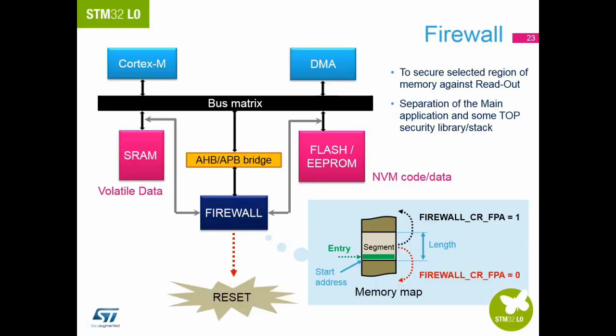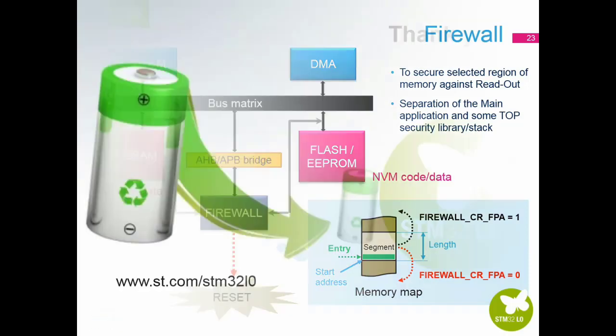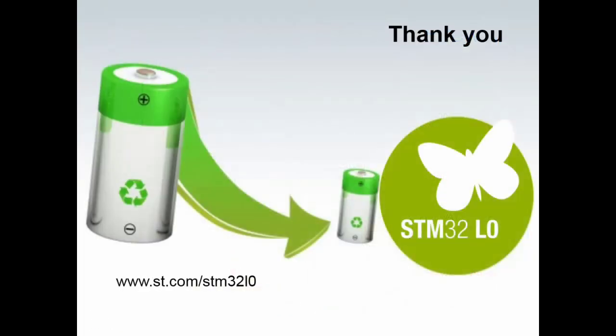The Firewall is a new security peripheral designed to secure a selected region of flash, E2PROM, SRAM, or any combination of memory areas. At startup you create the address range in each memory block to protect, then you enable the Firewall. If the entry or exit procedure is not met, then a reset is generated. This protects from malicious code or bootloaders. Thank you for listening to this section.